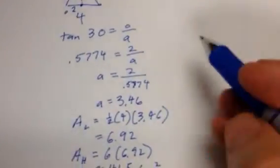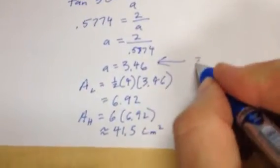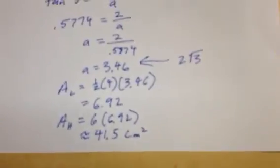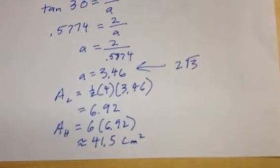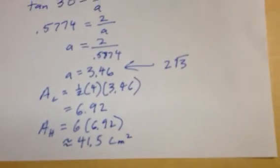Once again, this step right here to get down to my apothem, the shortcut to get there would have been 2 times square root of 3 if I had remembered my, if I had remembered my 30, 60, 90 shortcuts. That's enough. Bye.